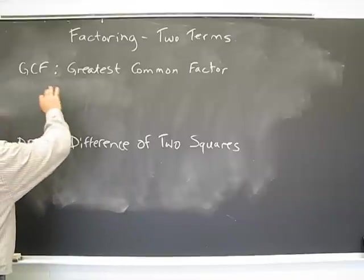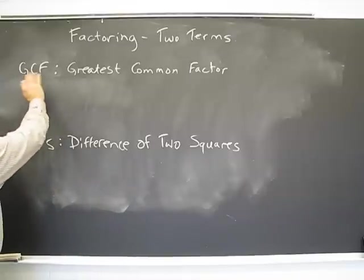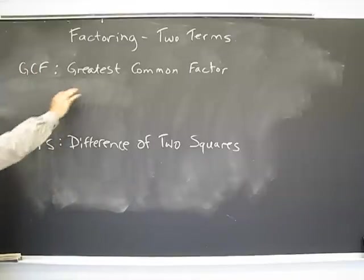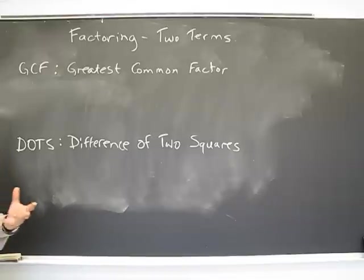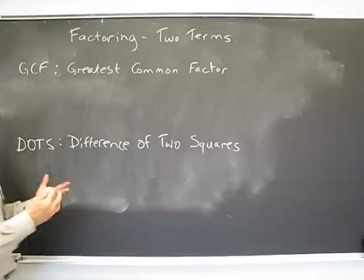We have the idea of two situations can occur. There's something called the greatest common factor, GCF, or the difference of two squares, which we abbreviate as DOTS. What we want to do is turn two pieces that are added or subtracted into a multiplication of two things or more.